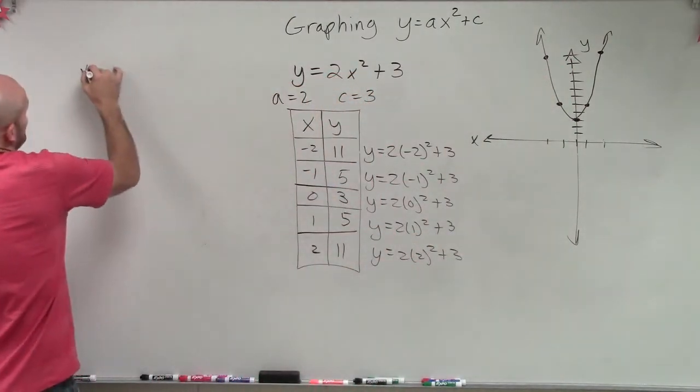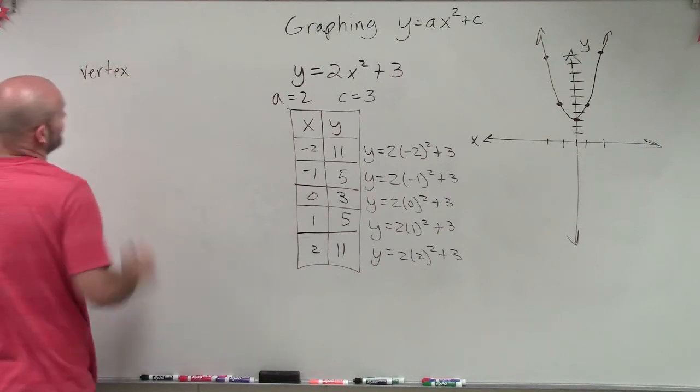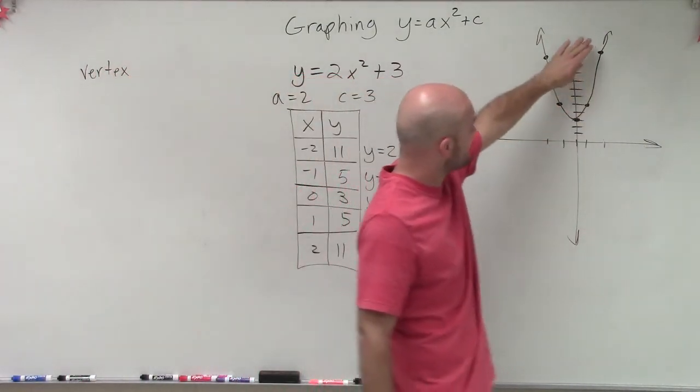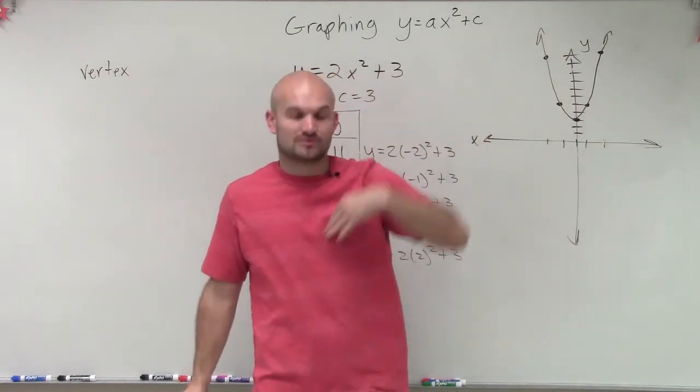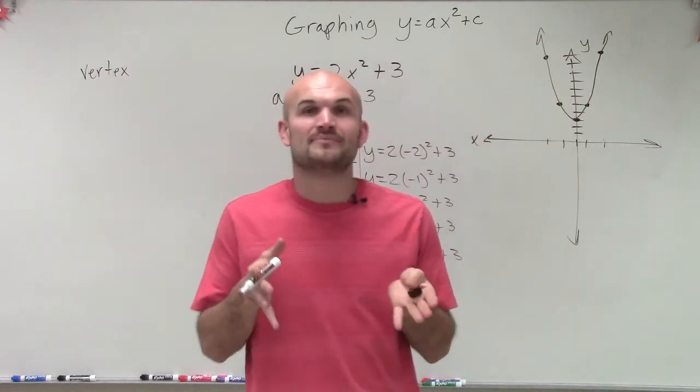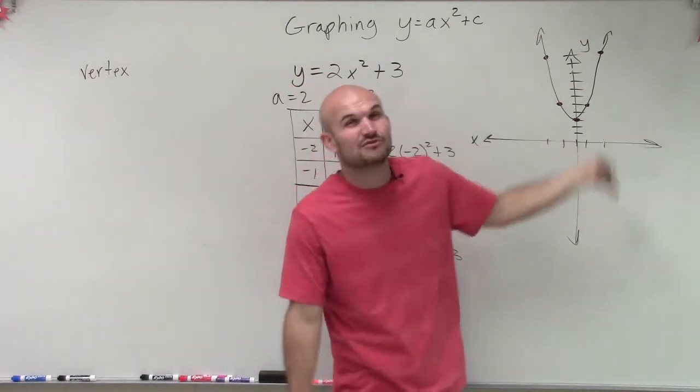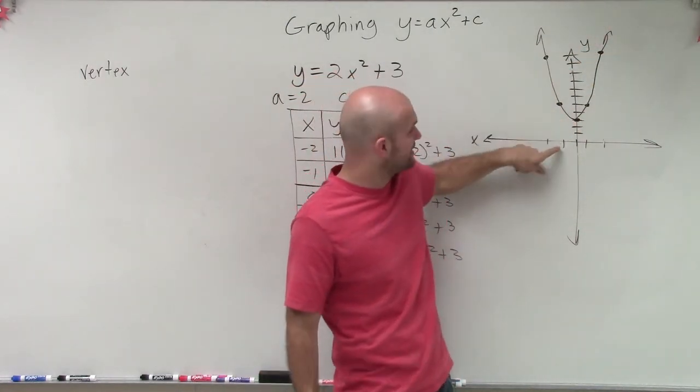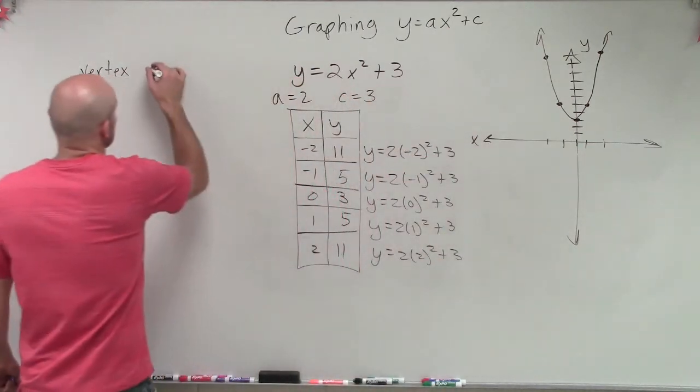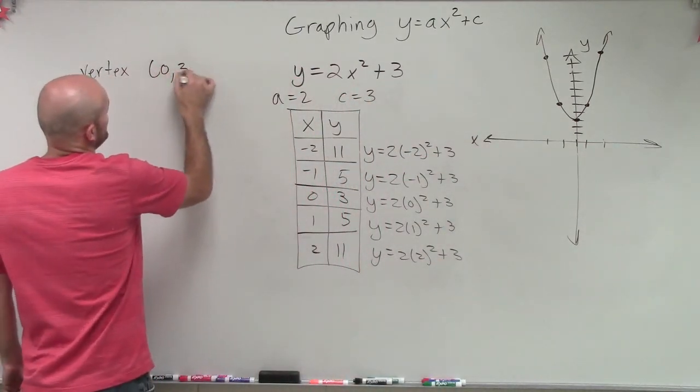So that's going to be very important because when we want to take a look at our vertex, the vertex is now the minimum or the maximum amount on our graph. Well, we don't have a maximum amount because this graph is going to keep on going up to infinity. But the minimum amount we can now say is the coordinate point 0, 3.